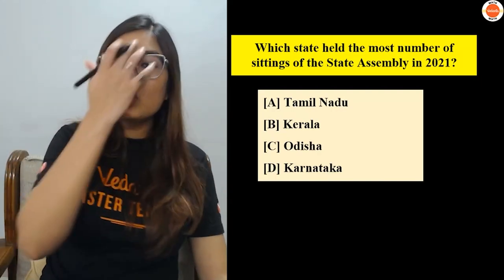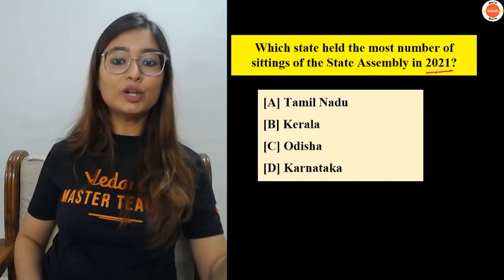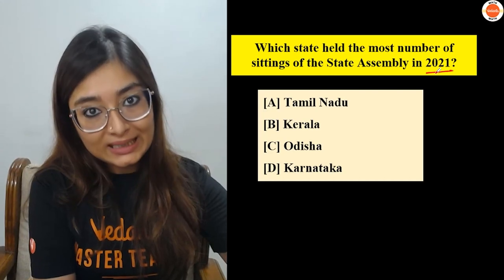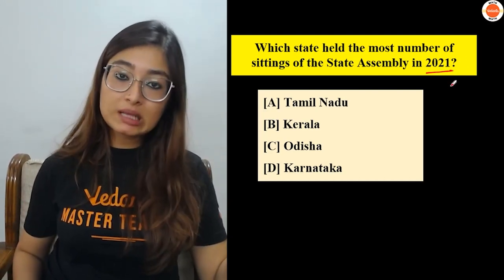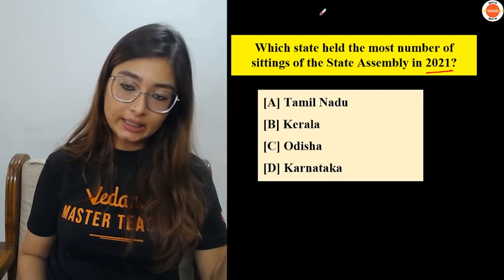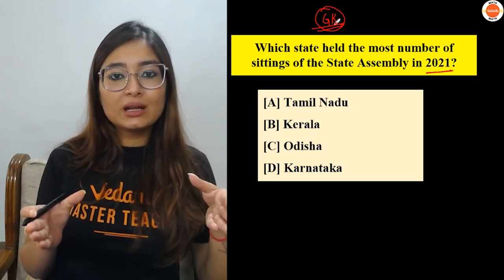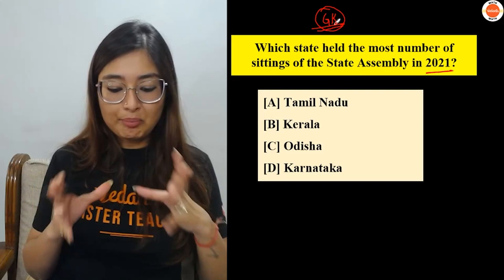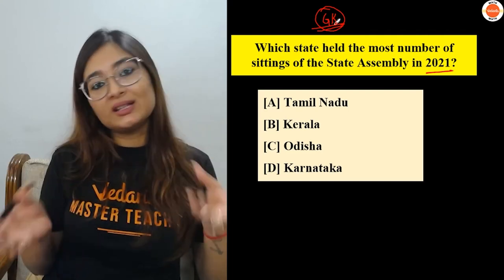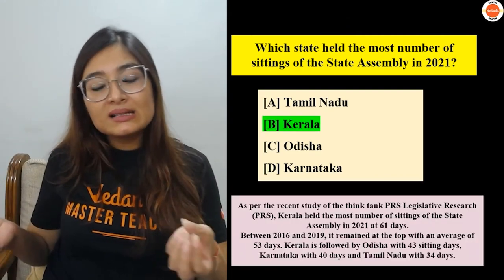Question: Which state held the most number of sittings in the state assembly in 2021? Options: Tamil Nadu, Kerala, Odisha, and Karnataka. Read as many things as possible. Either you know it or you don't — there is nothing in between. Guessing is a different thing. The correct answer is Kerala.